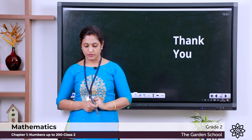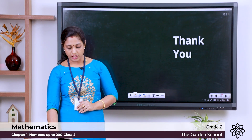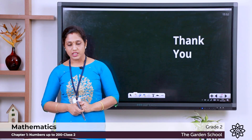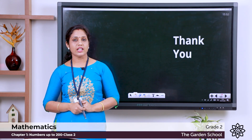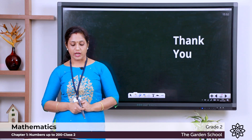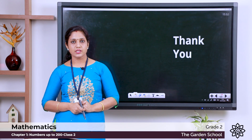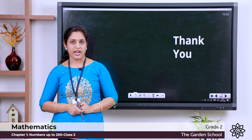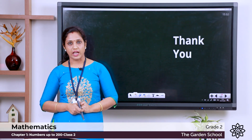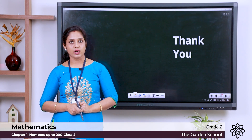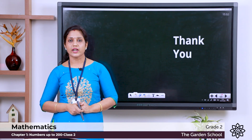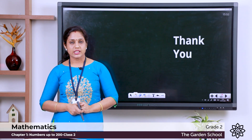Let us move on to the third question: Fill in the blanks. For A, in 194, find the place value of 9 and the face value of 9. Check the place value: 9 comes in the tens position, so the place value of 9 is 90. The face value remains the same, that is 9. Write 90 in the first box for place value and 9 in the next box for face value. There are four more questions — you can complete them.